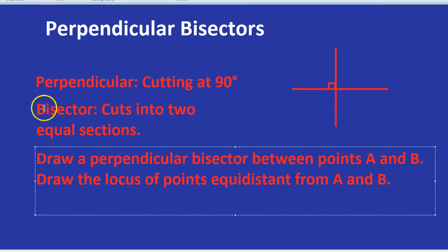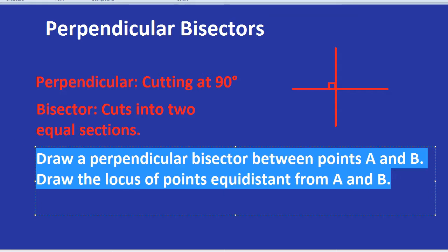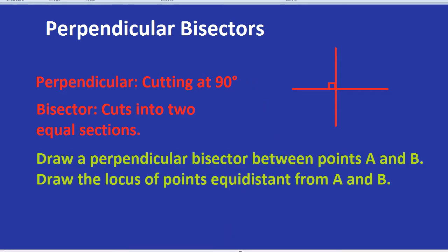But wait, I thought a bisector splits things exactly equally and perpendicular cuts between them. So again, they'd be asking you for a perpendicular bisector. Draw the locus of points equidistant from A and B would be the same in this case as drawing a perpendicular bisector between points A and B. That's fine, you're saying, but you still haven't actually showed me how to do it. So let's do it.